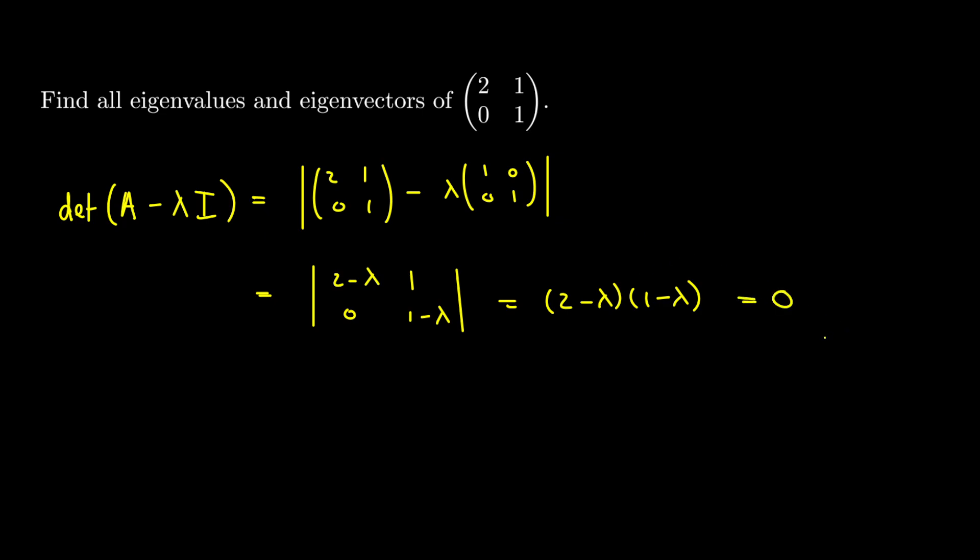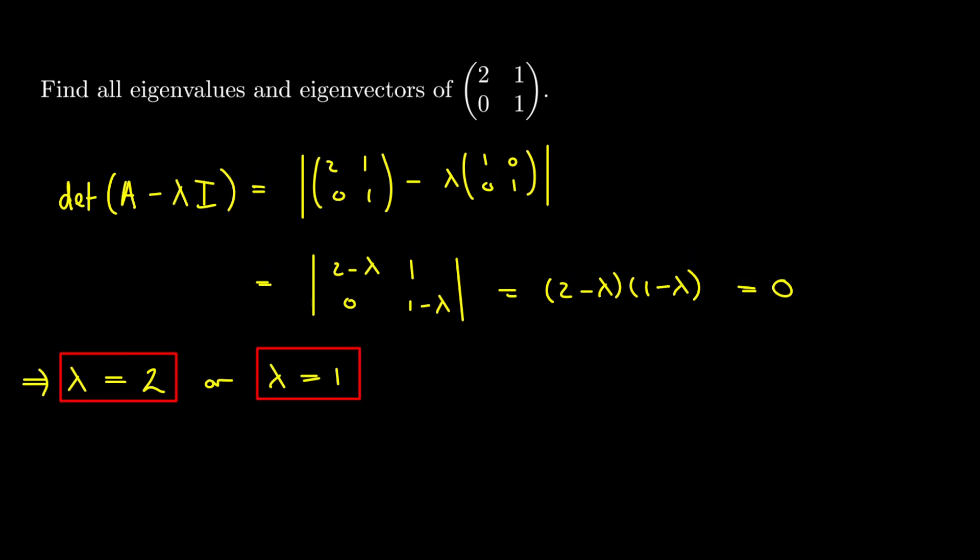So whatever lambda is, it has to make the characteristic equation 0. So that gives us only two possibilities. We have only two possible lambda. Lambda is equal to 2, or lambda is equal to 1. So these are our two eigenvalues. We have now found eigenvalues, and now your question is, what are the eigenvectors? And we can now, after finding the eigenvalues, the next step is we can now find the eigenvectors here.